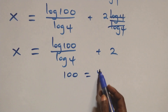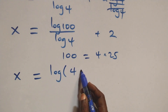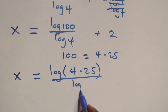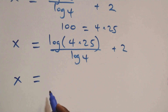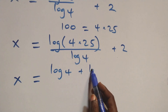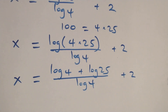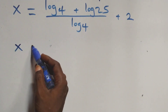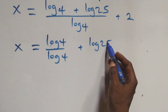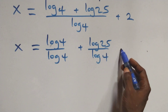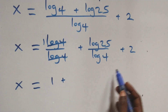We can write 100 as 4 times 25. What we have becomes x equals to log of 4 times 25 over log 4 plus 2. This follows the log product rule, so we have x equals to log 4 plus log 25 over log 4 plus 2. We separate this into two fractions: x equals to log 4 over log 4 plus log 25 over log 4 plus 2. Here log 4 cancels each other, leaving 1, so x equals to 1 plus 2 plus log 25 over log 4.